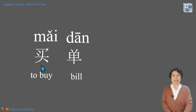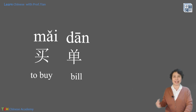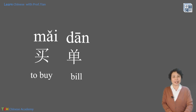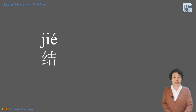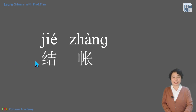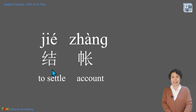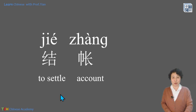So 买单 is used everywhere in China. People in the south and people in the north all use 买单 to express 'to buy the bill.' Actually, there is another way to express this idea: 结账. 结账 means to settle account, and it is more often used by people in the north. But if you say 结账 in the south, people can still understand. So just remember, we have two ways to express buying the bill.